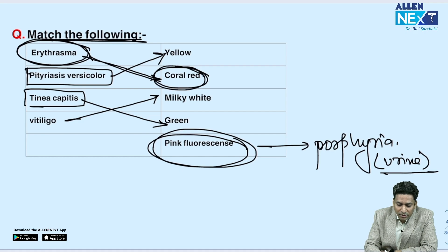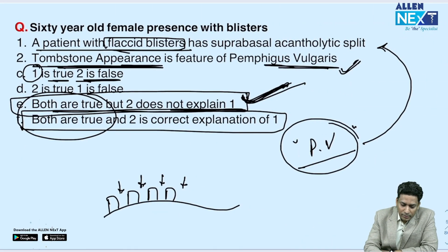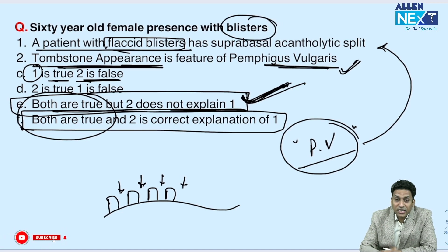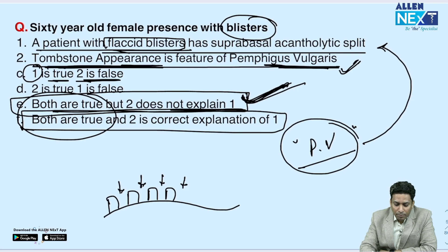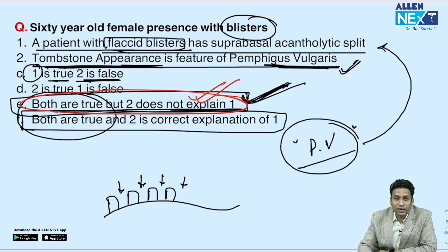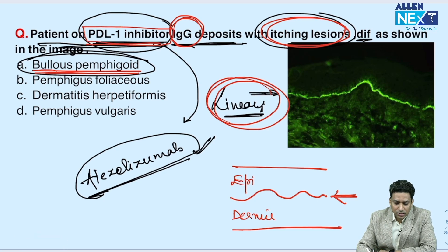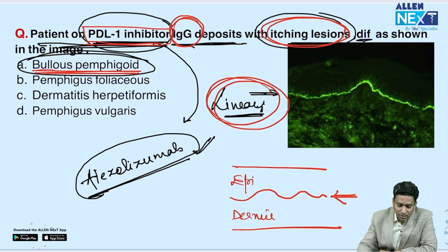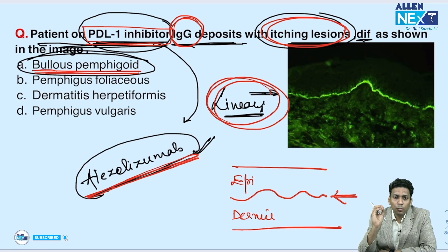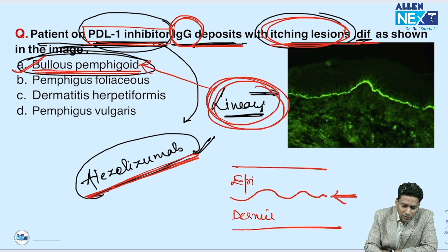Match the following: erythrasma — coral red; Pityriasis versicolor — yellow; Tinea capitis — green; vitiligo — white fluorescence under Wood's lamp. Then the assertion-reason question: flaccid blisters with suprabasal acantholytic split and tombstone appearance in pemphigus vulgaris — both statements are true but the second does not explain the first. Patient on PD-L1 inhibitor: these are immune checkpoint inhibitors like atezolizumab that predispose to bullous pemphigoid, supported by IgG deposits, itchy lesions, and linear DIF pattern.